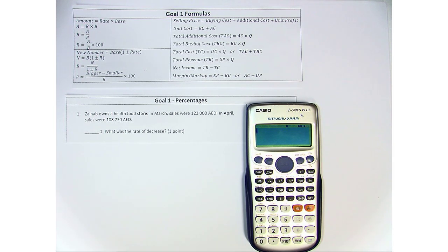When we're looking at rate, we need to take the bigger number minus the smaller number, divide by B, which is our original number, and then multiply by 100.